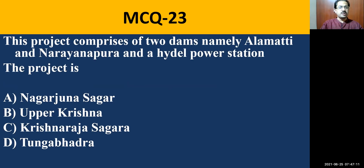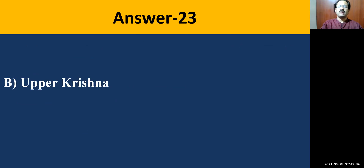MCQ question number twenty-three: This project comprises of two dams, namely Alamatti and Narayanapura, and a hydroelectric power station. The options are Nagarjuna Sagar project, Upper Krishna project, Krishna Raja Sagara project, or Tungabhadra project. The correct answer is the Upper Krishna project, located in Bagalkot.